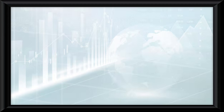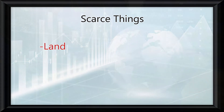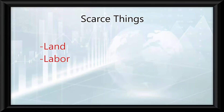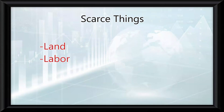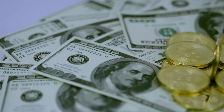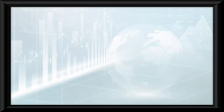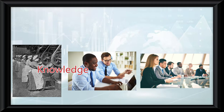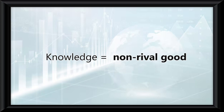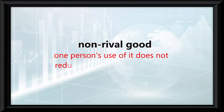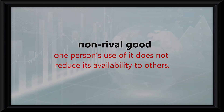Many factors in economics are scarce, such as land, as there is only so much land in the world. Labor is also scarce, because there is a limited number of people available with specific skills. And same with capital, as there is only a finite amount of money in the world. The only thing that is said to not be scarce is established knowledge. Once knowledge is created, it can be shared and used by multiple people simultaneously without being diminished. This characteristic makes knowledge a non-rival good, meaning one person's use of it does not reduce its availability to others.